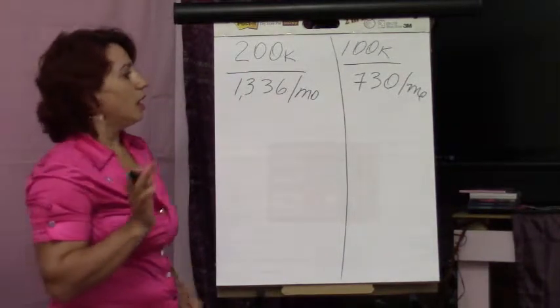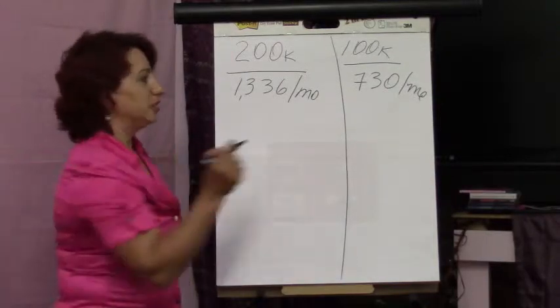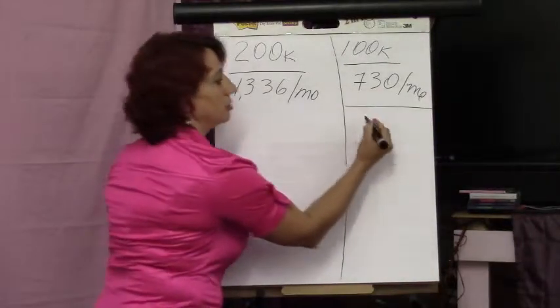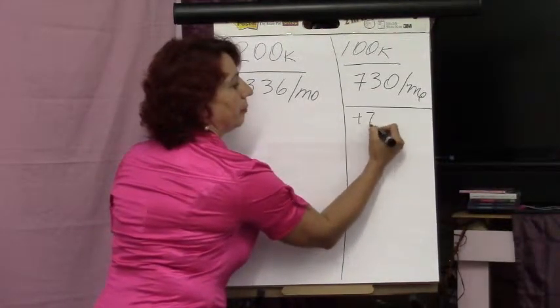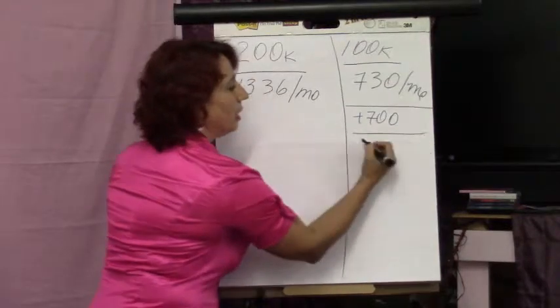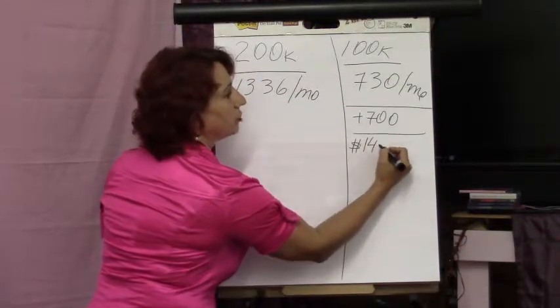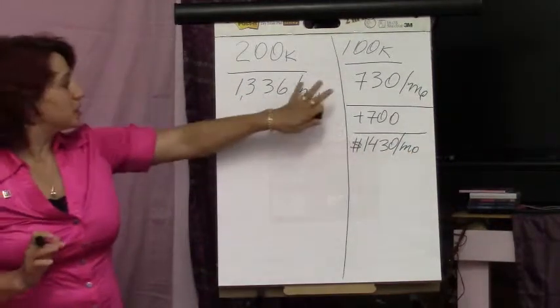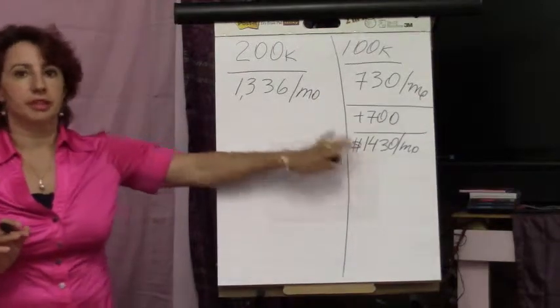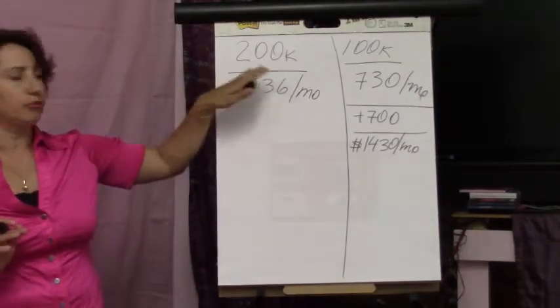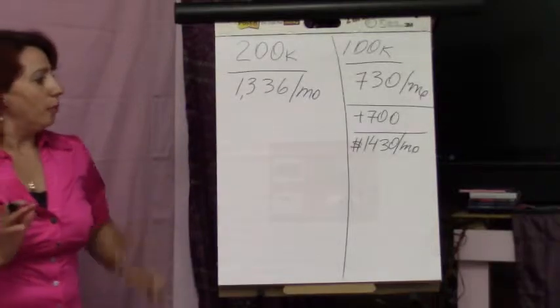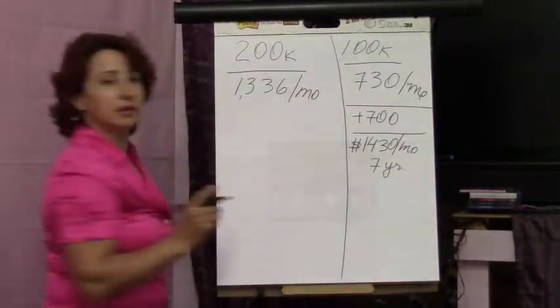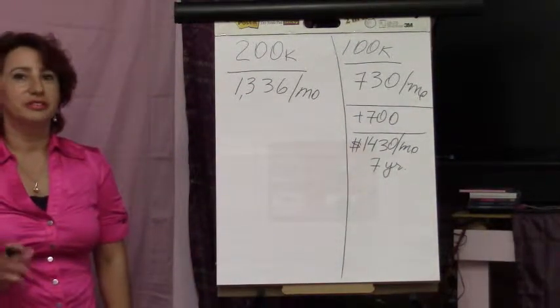But let's start with the fun part. If we double the payment for this house, the payment will be $1,430 per month. You see, there is not a significant difference between the numbers for the first and second home. But you will pay for this home in 7 years. Does it sound good for you? I think so.